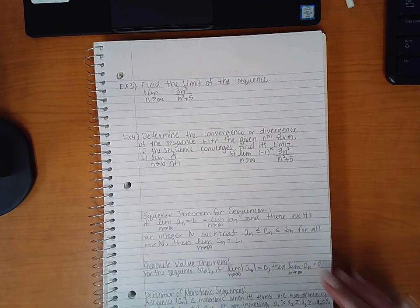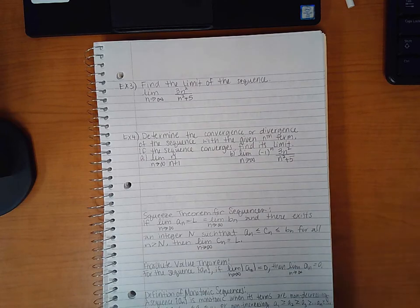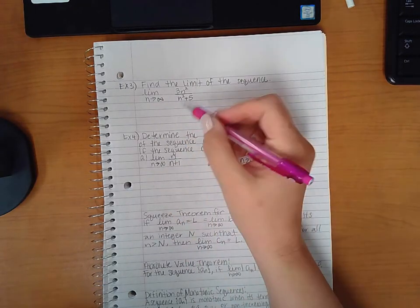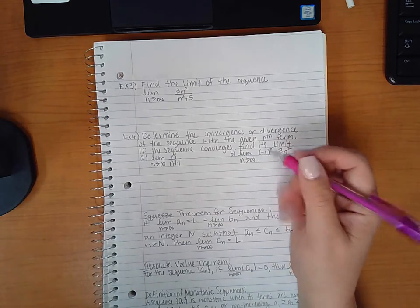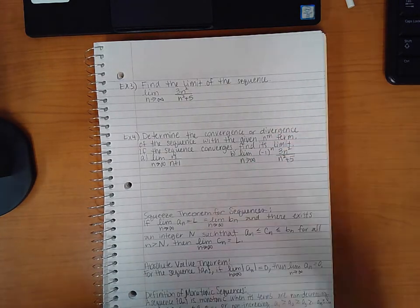Continuing with section 9.1, we have example three which says find the limit of this sequence. So we have the limit as n goes to infinity of n squared over n squared plus five. So let's apply the rules that we did before. You could do L'Hopital's rule or you could do just the division rule.